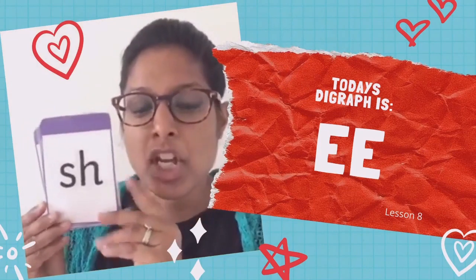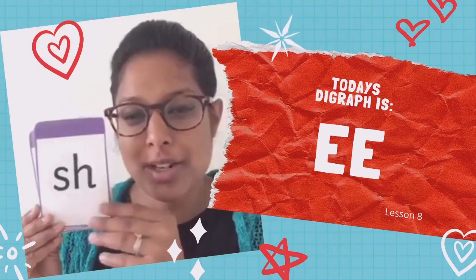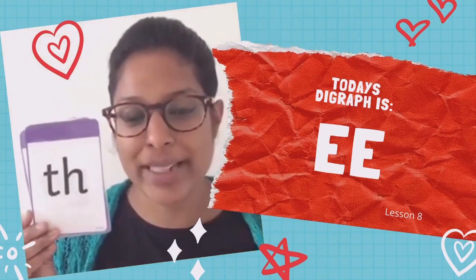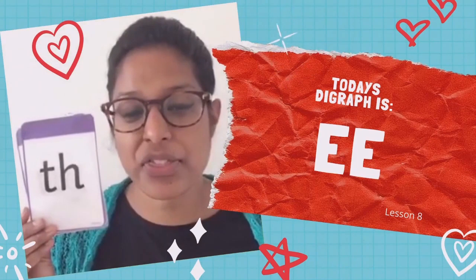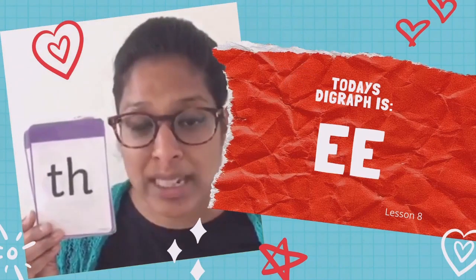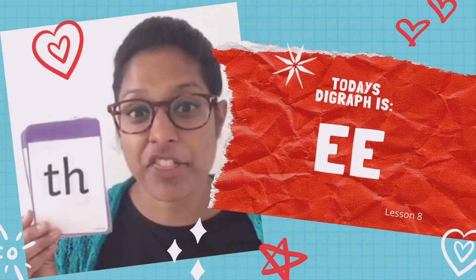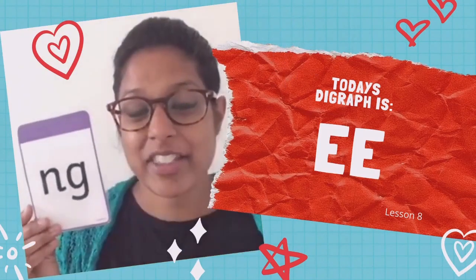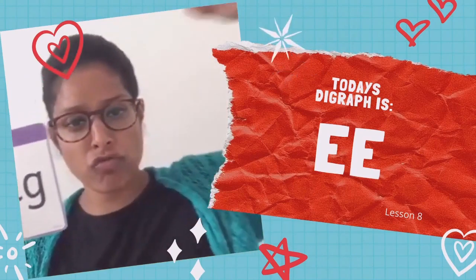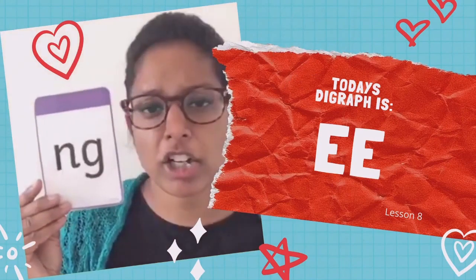This one. Sh. Remember the action? Sh. This one — we can say this one two ways, can't we? Th and th. You're the naughty clown, remember, you stick your tongue out. And this one: Nng. You're the strong man or the strong woman and you go Nng.